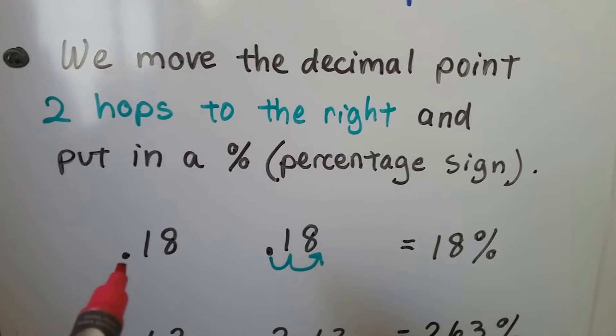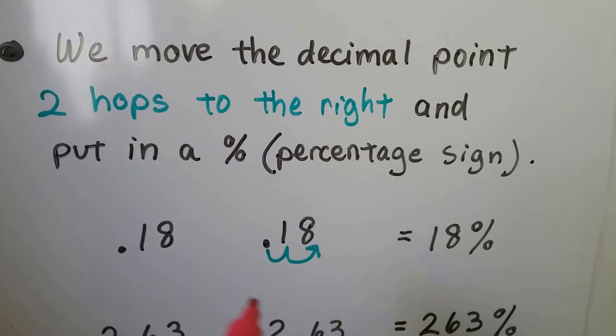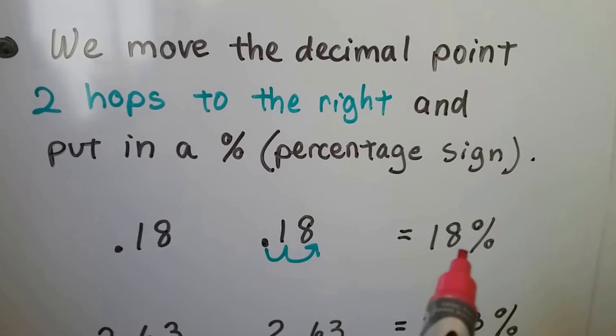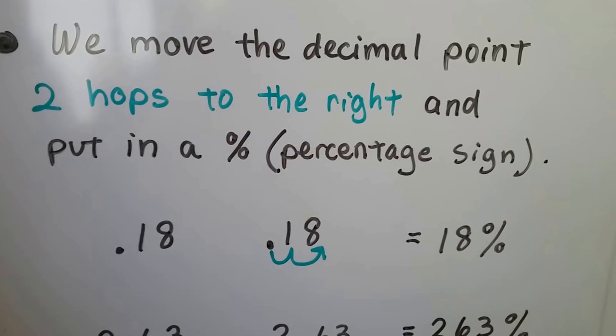So 18 one-hundredths, we move it two hops. And we don't need to write that decimal point there, we just put 18 percent.